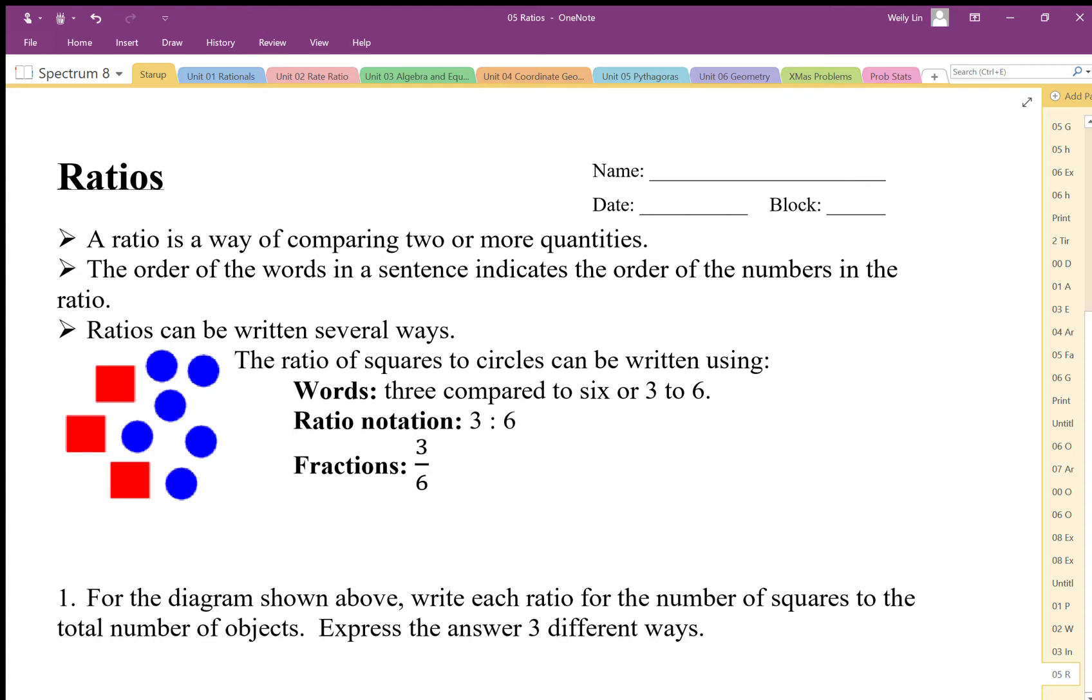We can write ratios as words, for example three compared to six or three to six. We can have ratio notation three to six, or we can put it in fraction notation as well.